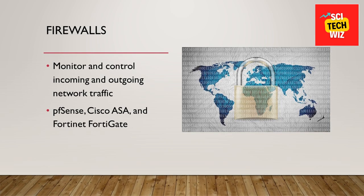Number one: Firewalls. Firewalls monitor and control incoming and outgoing network traffic, acting as a barrier between a trusted internal network and external networks. Examples include pfSense, Cisco ASA, and Fortinet FortiGate. Normally, firewalls are used by organizations, not by individuals.